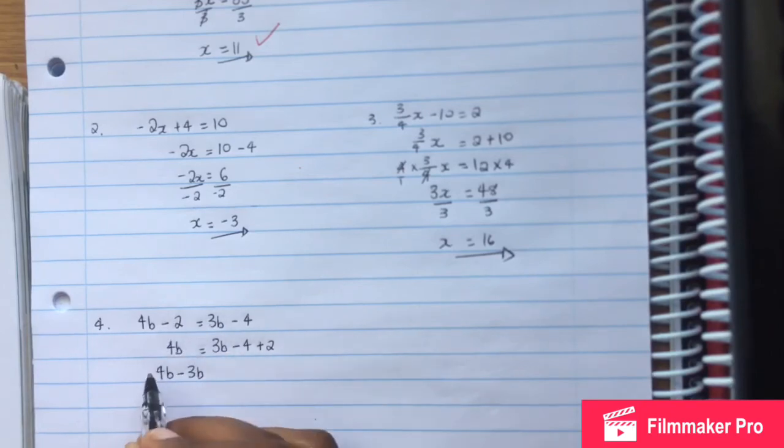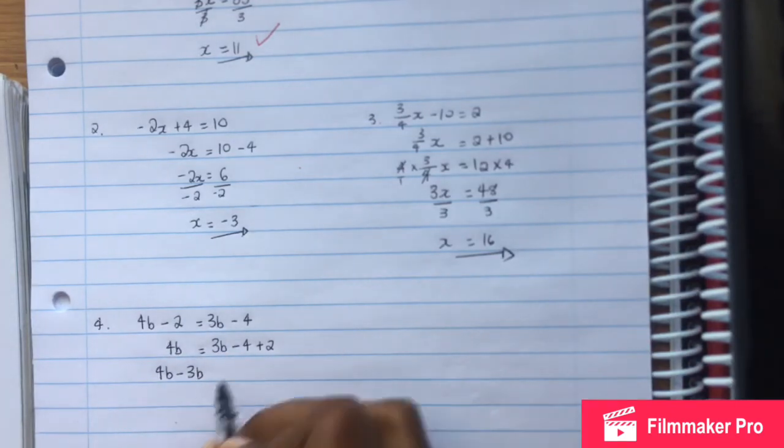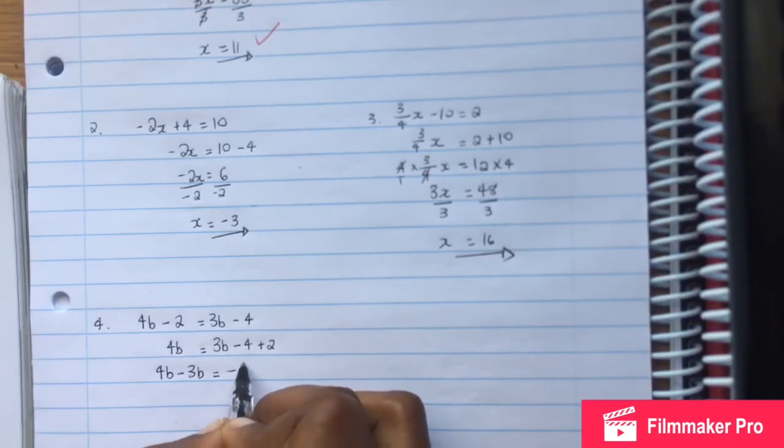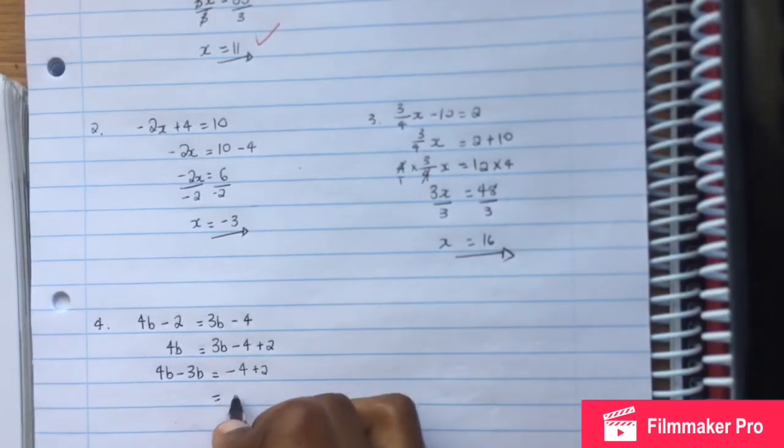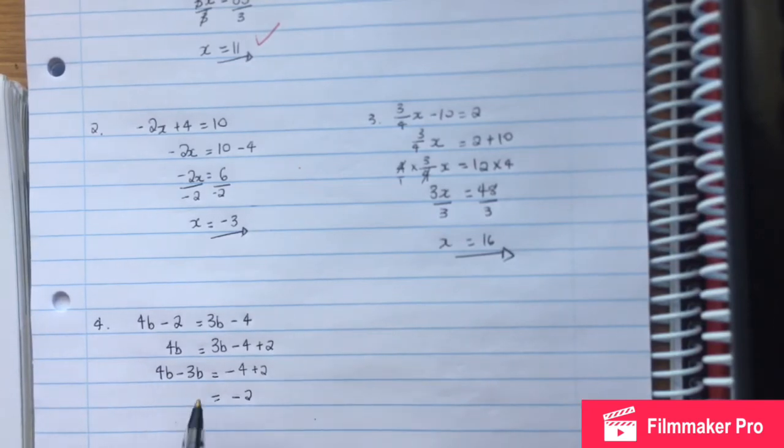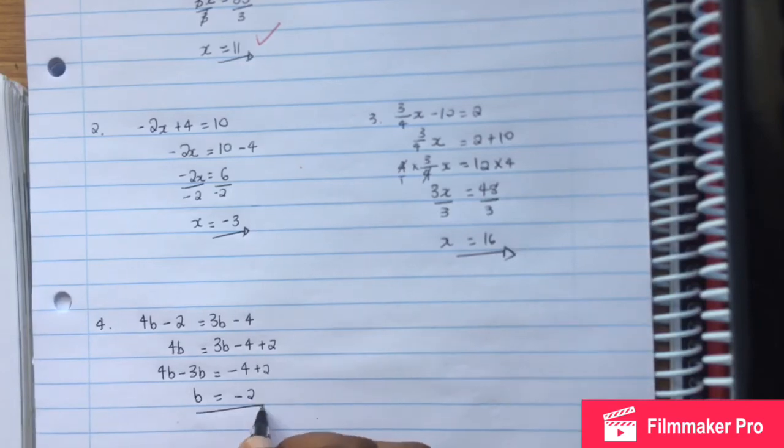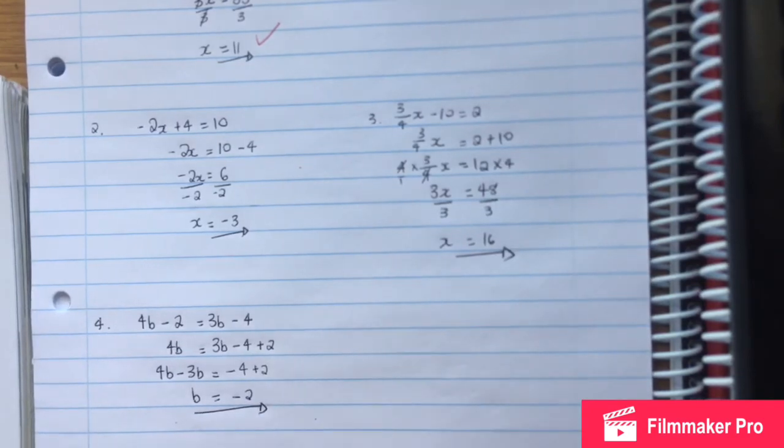We have 4b, and 3b we want to move it to the other side. When we move it, it will become negative 3b. So 4b minus 3b is b, or 1b. Then negative 4 plus 2 is negative 2. Therefore b is equal to negative 2.